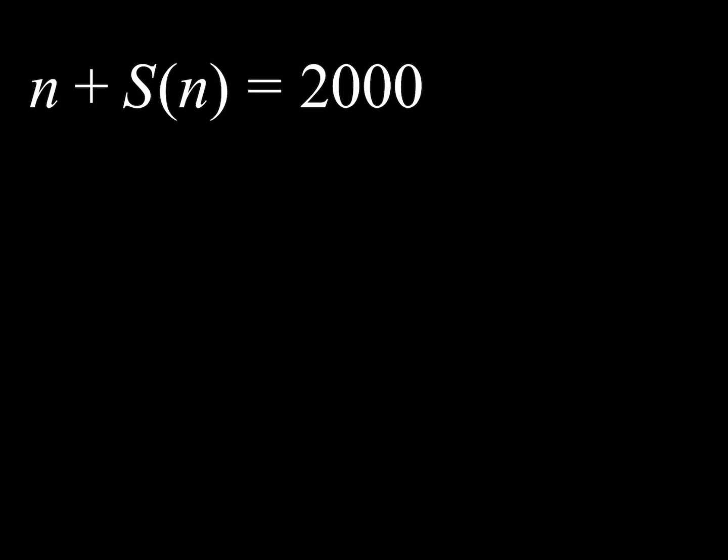Alright, so first of all, let's notice that n is a four-digit number. Why? Because if it's not, then the sum n plus S of n cannot be 2000. So starting with that assumption, n is a four-digit number.